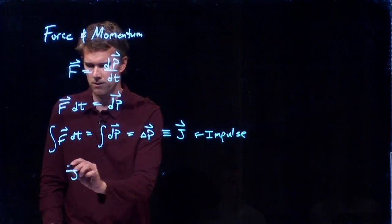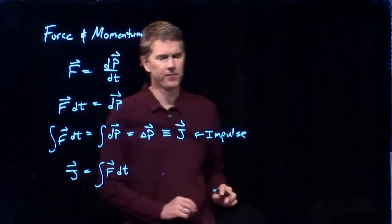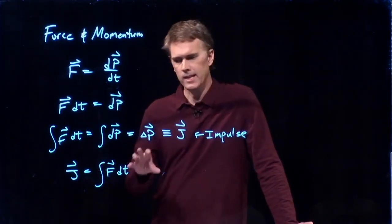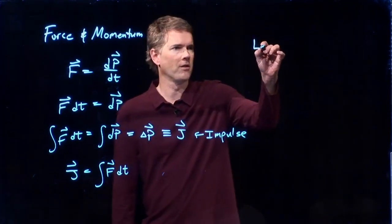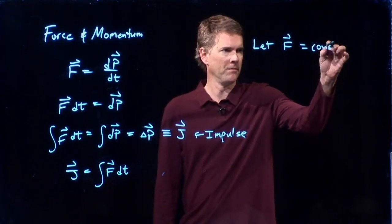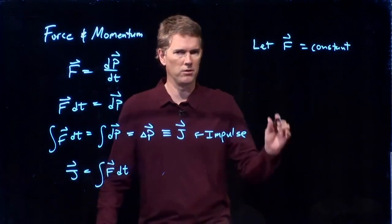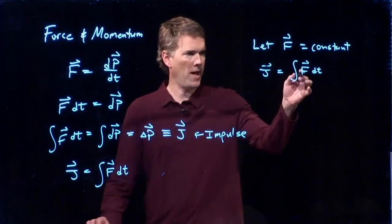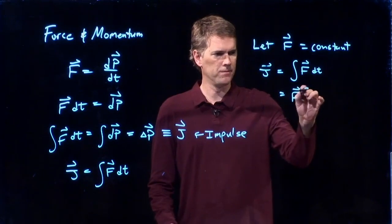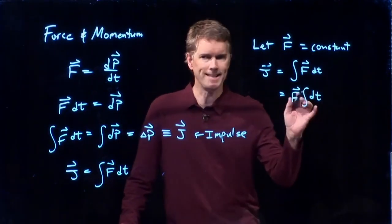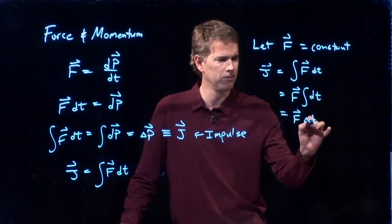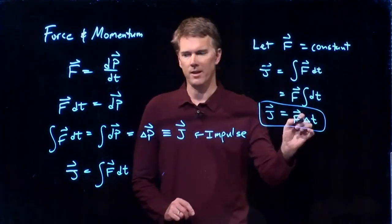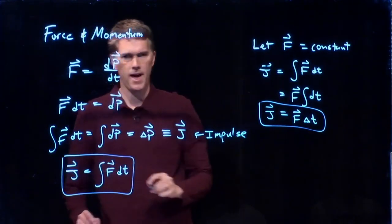Okay so impulse j is the integral of f dt. If I give you a function of f and a function of time then you just have to integrate that to get the impulse. Now a lot of times it simplifies. So for instance let's say that f is a constant. If f is a constant let's look at this integral. j is the integral of f dt. But we know if f is a constant it comes out of the integral. I can put it out in front. And if I integrate dt what do I get? I just get delta t. Some t initial to some t final. And so in the case of a constant f, j is this. In general j is that.